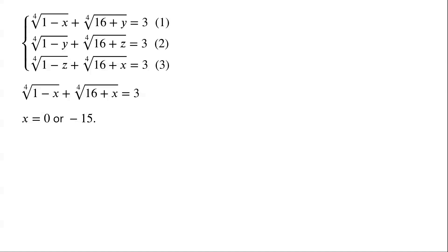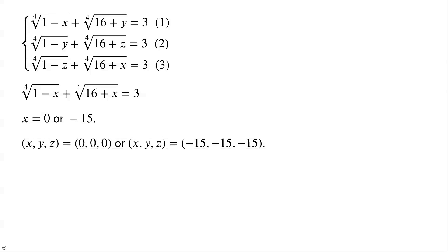The radical equation has two roots: 0 or negative 15. So the system of equations has two sets of solutions: (x, y, z) equals (0, 0, 0), or (x, y, z) equals (negative 15, negative 15, negative 15).